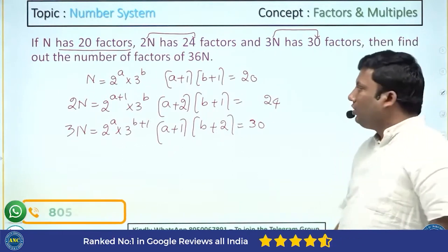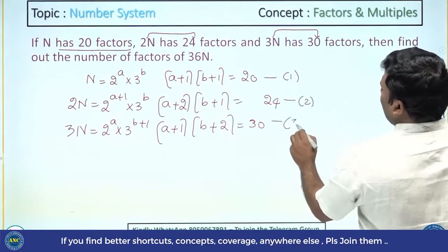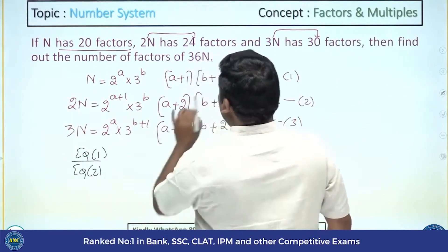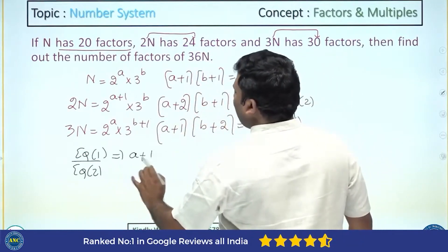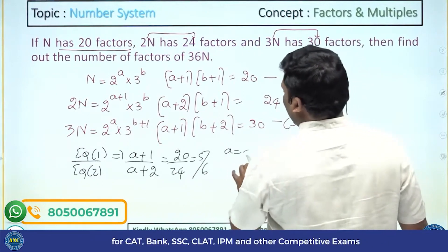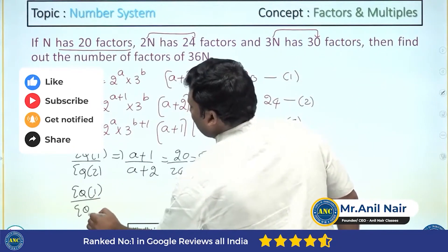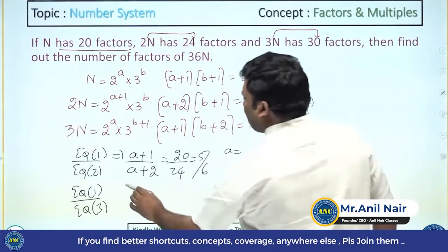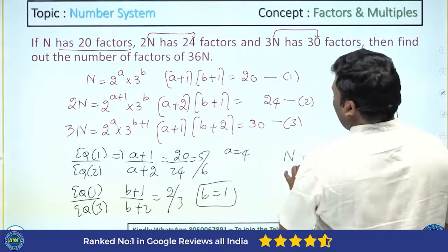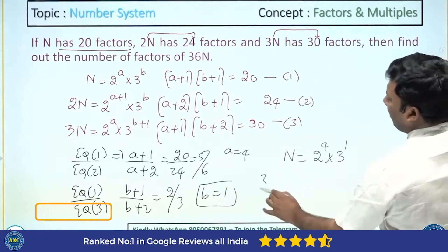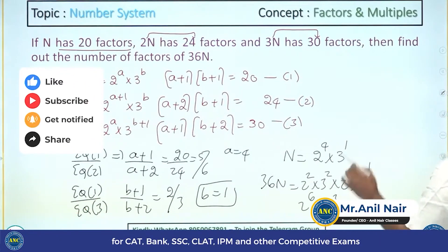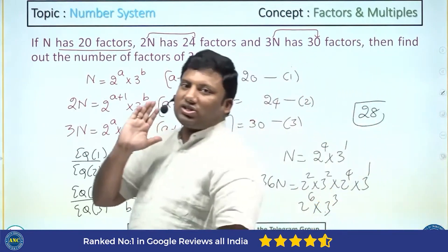Just by looking at the question: divide equation 1 by equation 2 — (B+1) cancels, giving (A+1)/(A+2) = 20/24 = 5/6, so A equals 4. Divide equation 1 by equation 3 — (A+1) cancels, giving (B+1)/(B+2) = 2/3, so B equals 1. Therefore N = 2 power 4 into 3 power 1. For 36N: 36 = 2 squared into 3 squared, so 36N = 2 power 6 into 3 power 3, giving 7 × 4 = 28 factors.